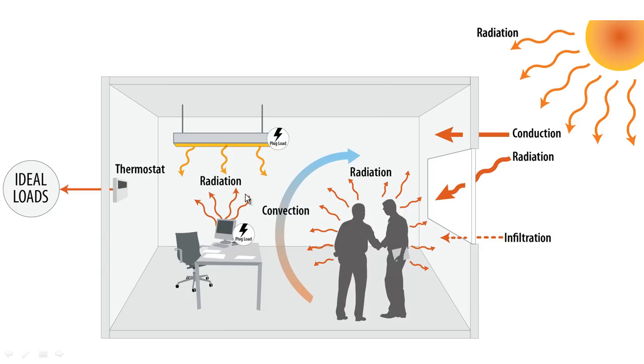Now EnergyPlus does an annual simulation and it does time steps that you can vary the amount of time, but a default time step might be 10 or 15 minutes. And so every 10 or 15 minutes, it's working like a bank account. It's adding up all these loads and keeping track of how much energy is coming into the zone. And then it uses the ideal air load system to remove that and maintain a temperature.